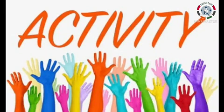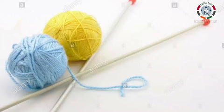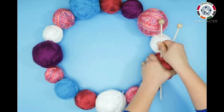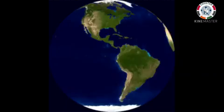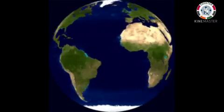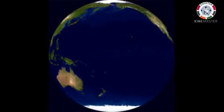Now see this activity. Take a ball of wool and a knitting needle. Push the needle through the center of the ball — this needle is acting like an axis. Now spin it slowly from west to east using the needle. The Earth also spins like this ball.